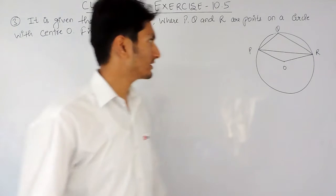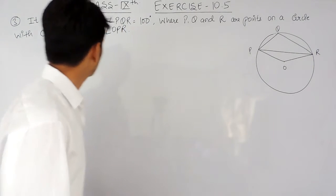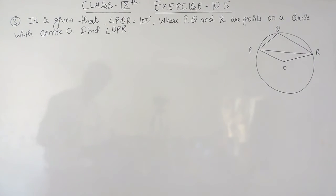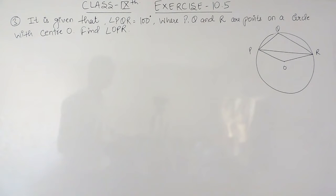Hello everyone. In this video we are going to solve question number three of Exercise 10.5. The question says it is given that angle PQR is equal to 100 degrees, where P, Q, and R are points on the circle with center O. You have to find angle OPR.